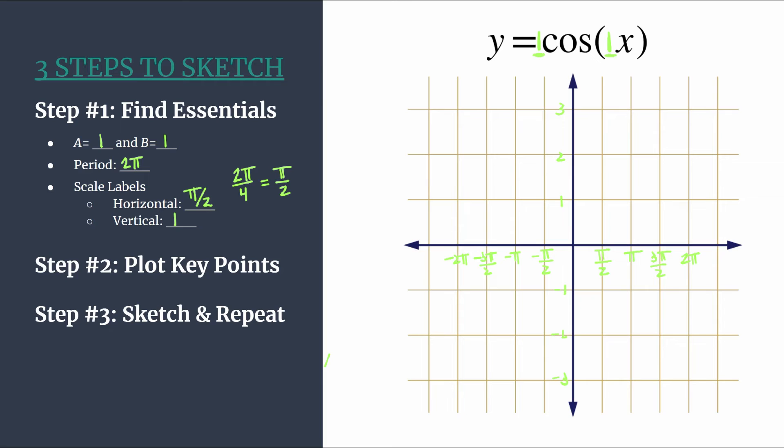So remember the pattern with a basic cosine graph that is not reflected, so we don't have a negative out front, is going to be max, zero, min, zero, and then repeat. And that max happens at zero, a. So we have our first point, our y-intercept is at zero, one. So that's our max. Our first zero happens at the next tick mark horizontally. Our min will be at the next one. Zero two will be at the next. And then our pattern would repeat.